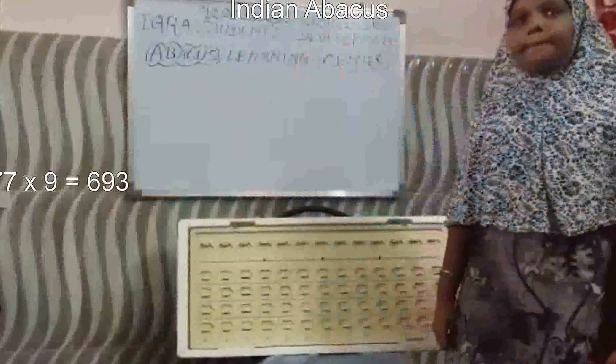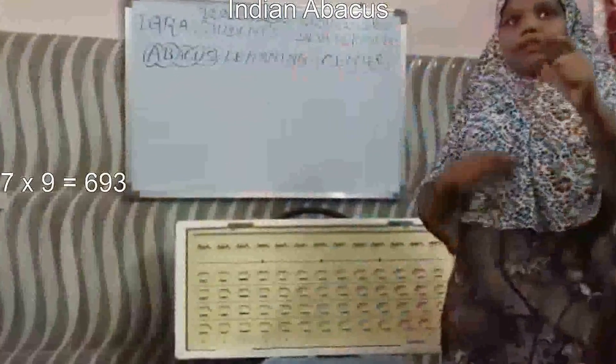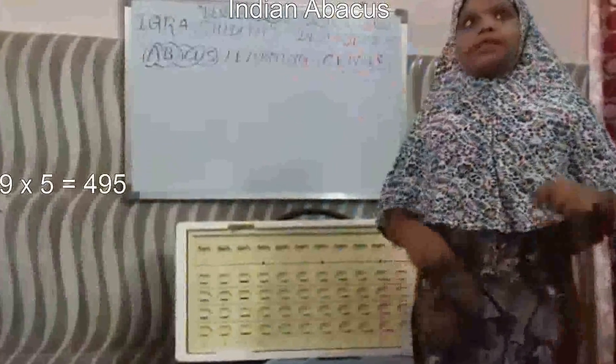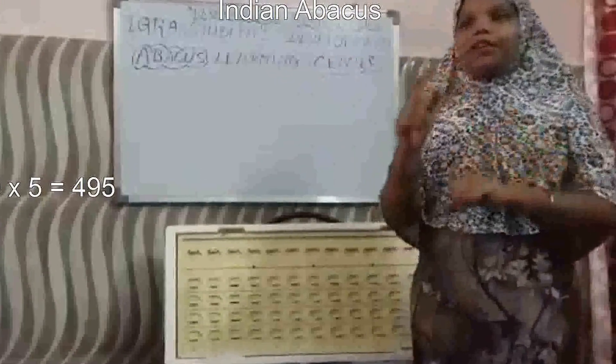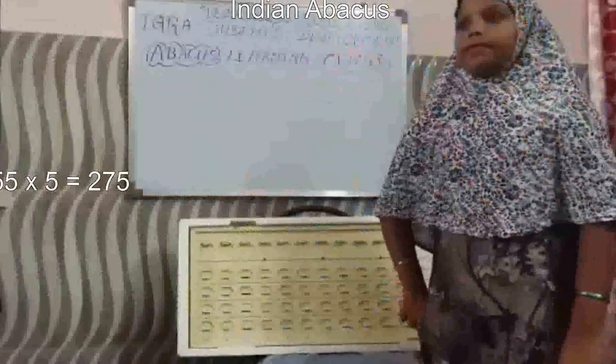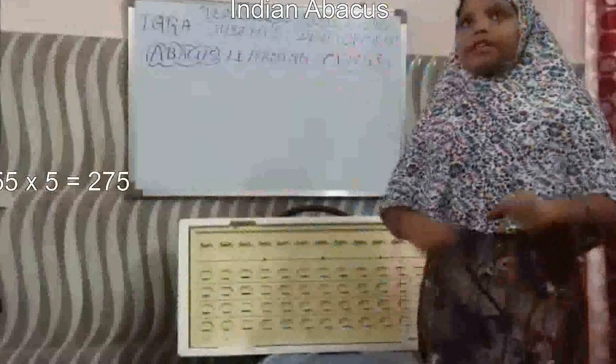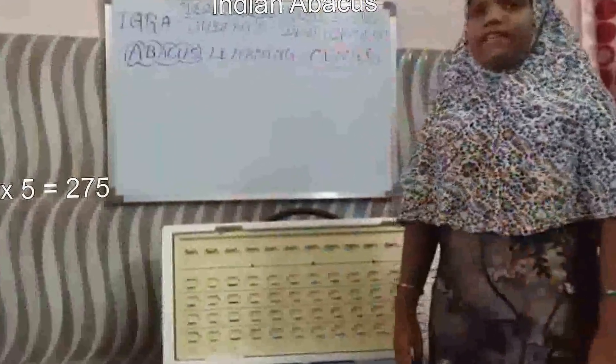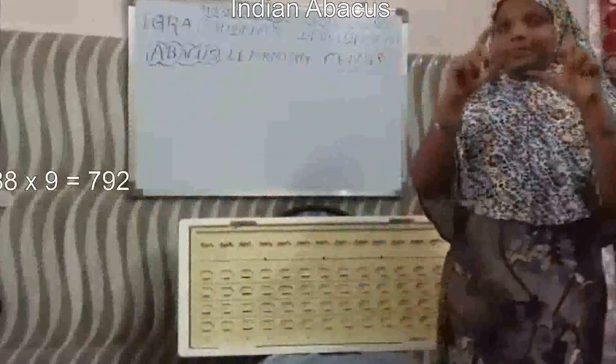77 into 9, 67 into 93, 99 into 5, 495. 55 into 5, 275. 88 into 9, 7 into 92. Sir?